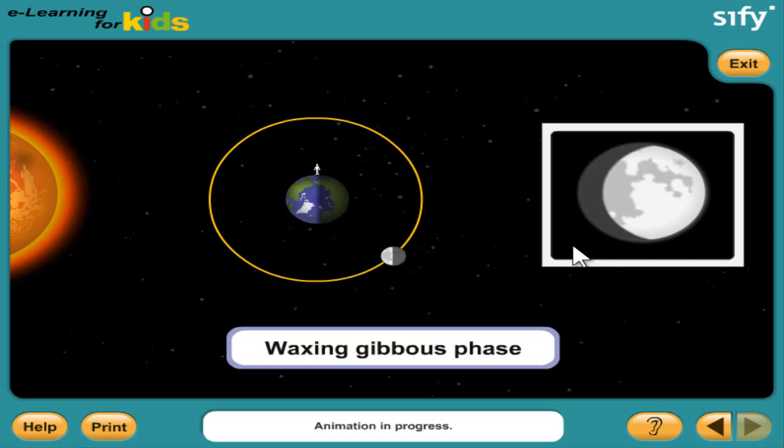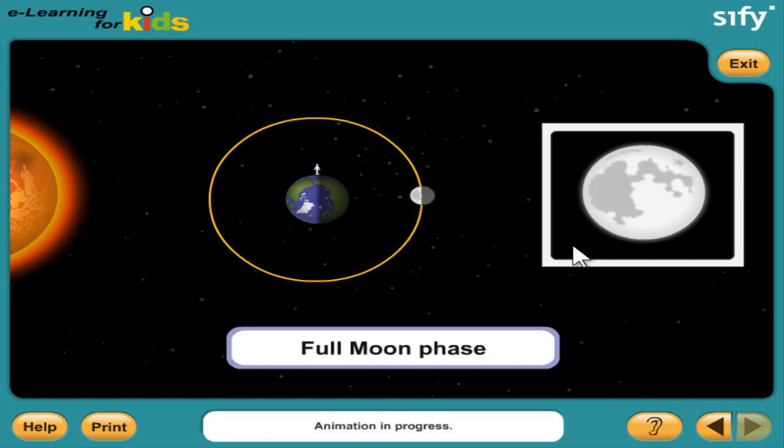In the waxing gibbous phase, more than half of the moon appears lit by the sun. When you see a waxing gibbous moon, you know that a full moon is just a few days away. During the full moon phase, the moon is on one side of the earth and the sun is on the other. The sun illuminates the half of the moon that faces the earth directly, and the moon looks like a full round circle.